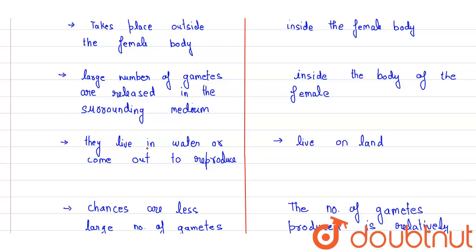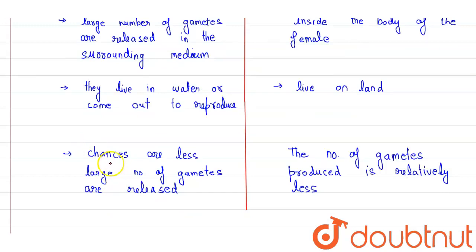Animals that have internal fertilization have completely transitioned to life on land. The chances are less for fertilization to happen, so a large number of gametes are released in external. In internal, the number of gametes produced is relatively less.